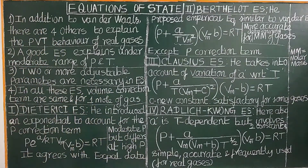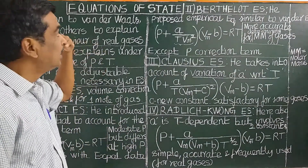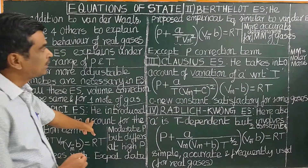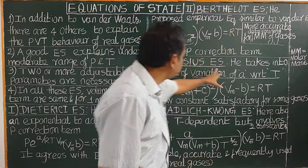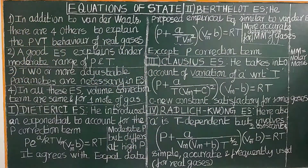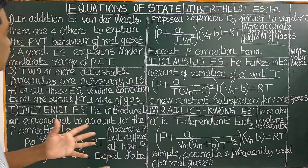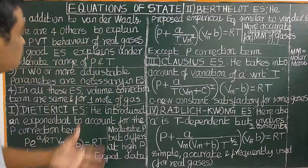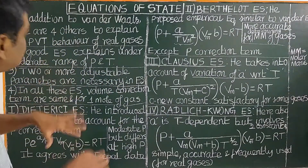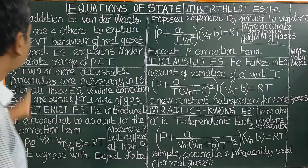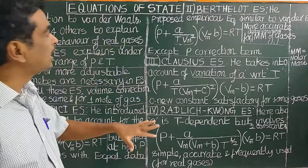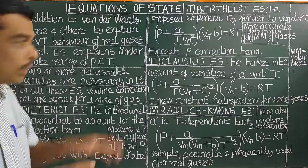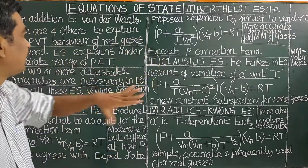Besides Van der Waals' gas equation, there are four other equations of state: the Dieterici equation of state, the Berthelot equation of state, the Clausius equation of state. We have already studied the ideal gas equation PV = nRT and derived the Van der Waals equation of state. These four other equations were developed to explain the real gas behavior — specifically the pressure, volume, and temperature behavior of real gases.